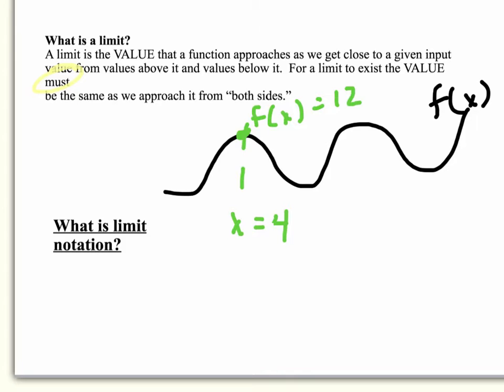Basically, what we are saying is that as we approach that value 4 from values below it, values below 4 is written with 4 and a little negative sign, and values above it, we can certainly see that our function value is approaching 12.